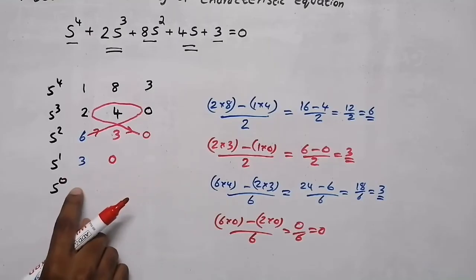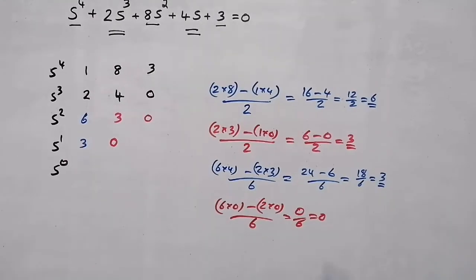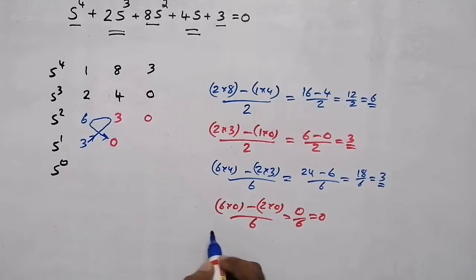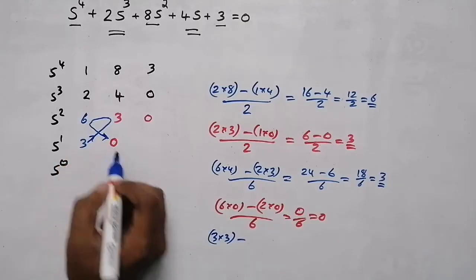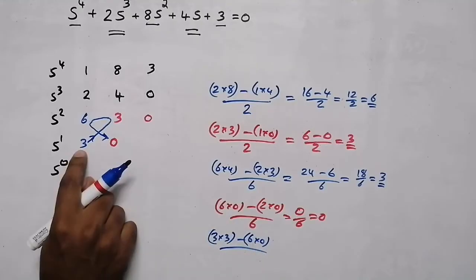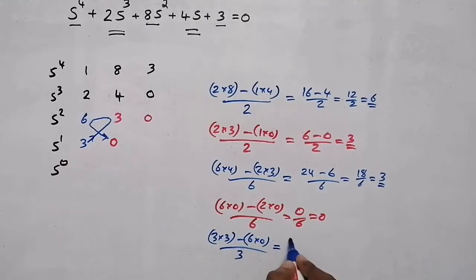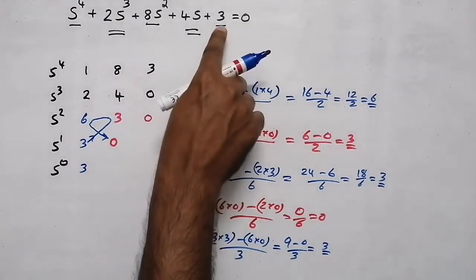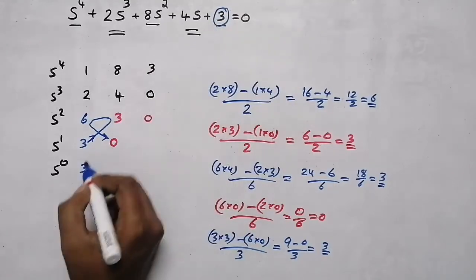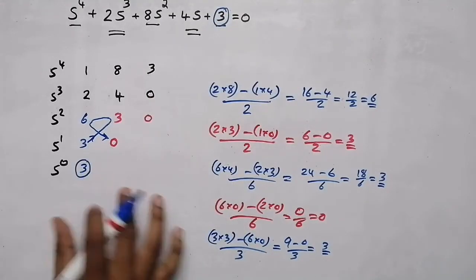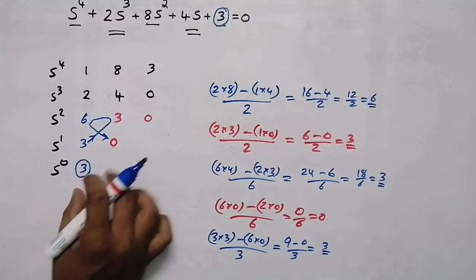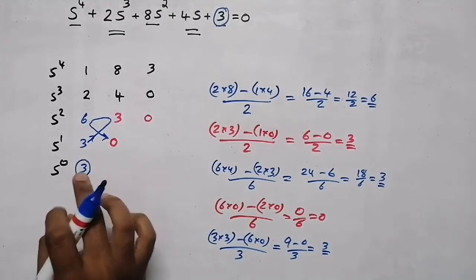Now we need to find the last element. Starting from 3, the direction goes like this: 3 into 3 minus 6 into 0, divided by starting element 3. That gives 9 minus 0 equals 9, divided by 3 — the answer is 3. The last element of our characteristic equation and the last element we calculated are both 3, so if both values are the same, our answer is correct.